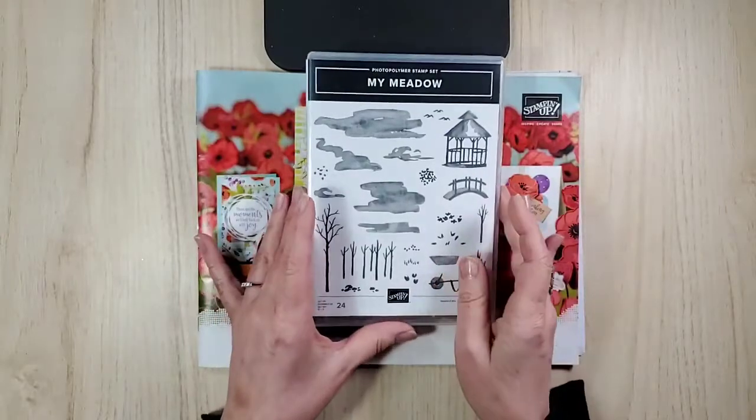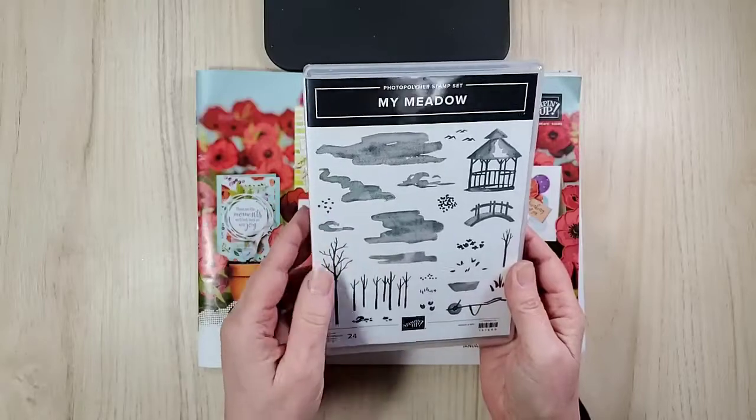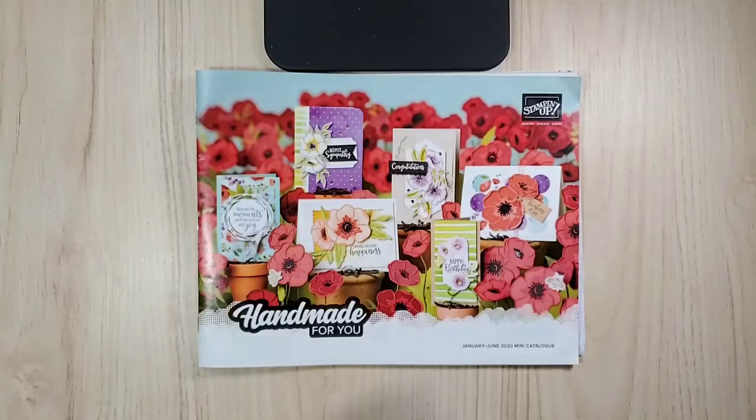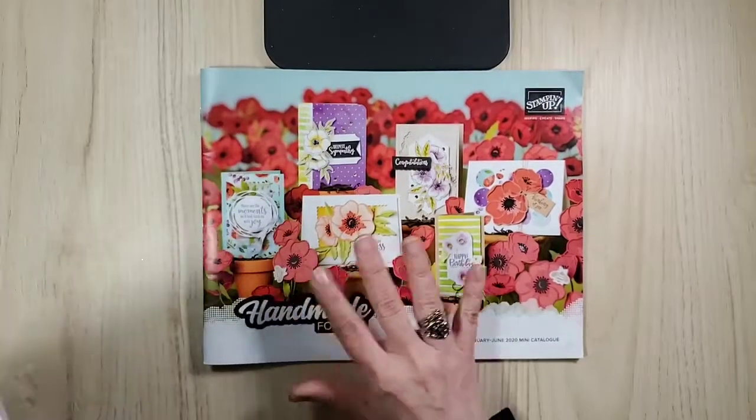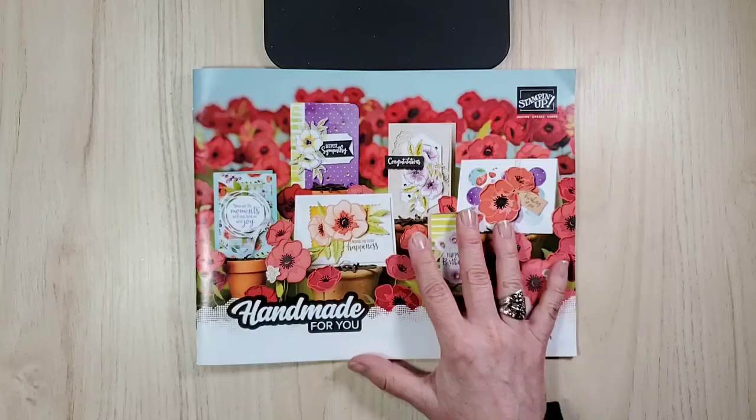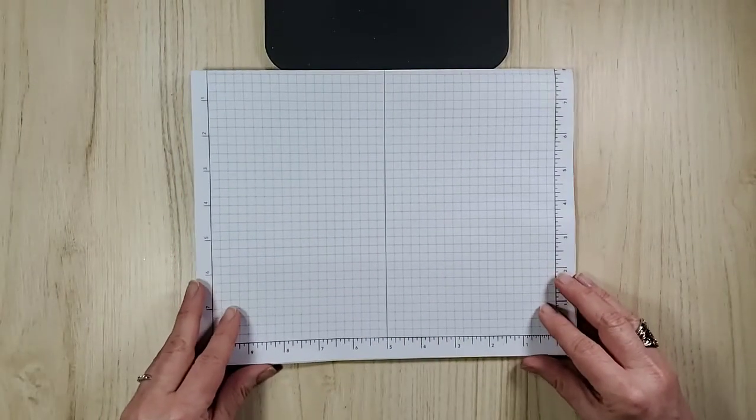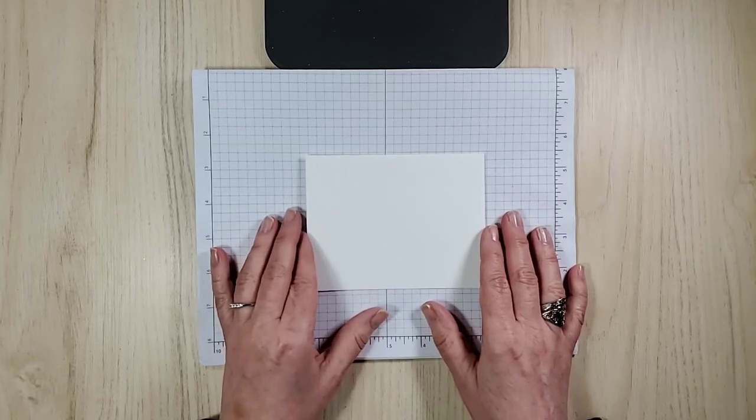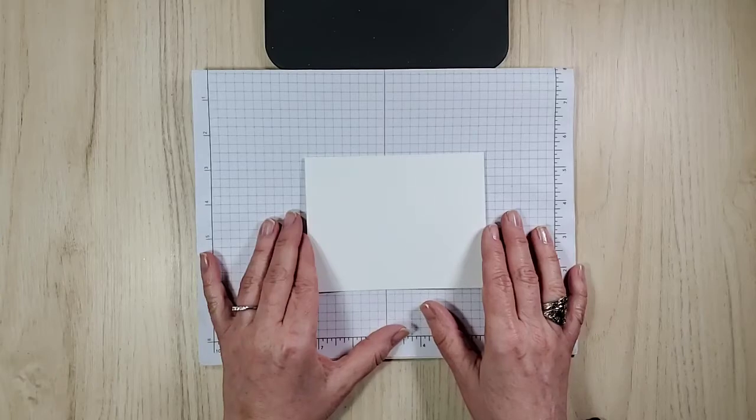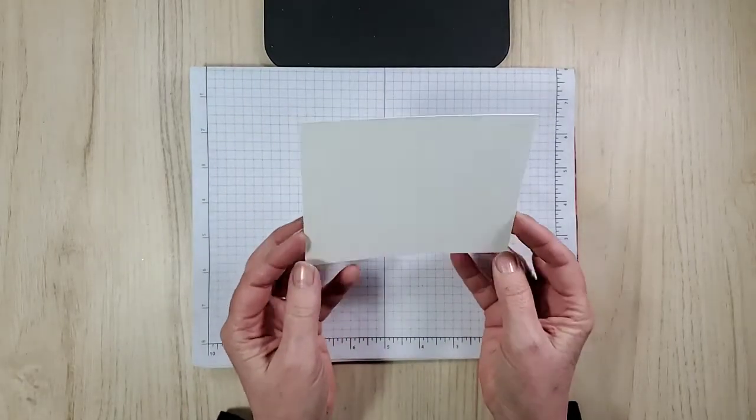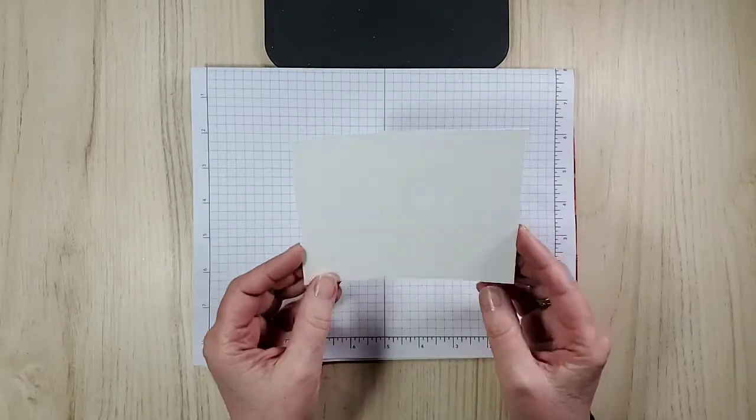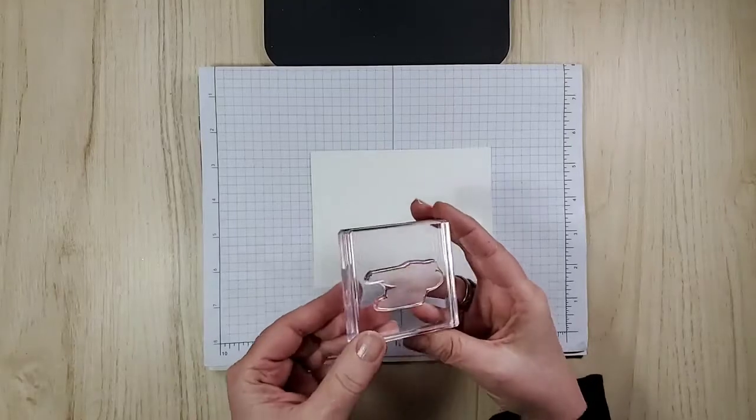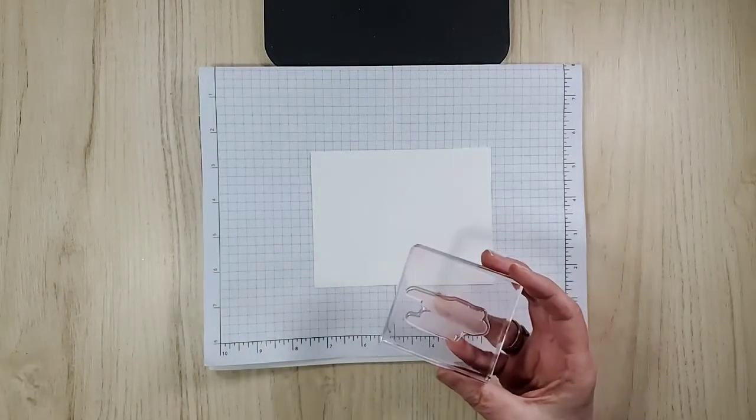I just want to mention that I am going to be using one of the stamps from My Meadow. I believe it's this one. I'll show you why in a couple seconds. When we're using photopolymer, this is the catalog, by the way. My card today was inspired by fellow demonstrator Alison Okamitsu. First thing is a piece of Whisper White, just the regular, not the thick cardstock, cut at four by five and a quarter.